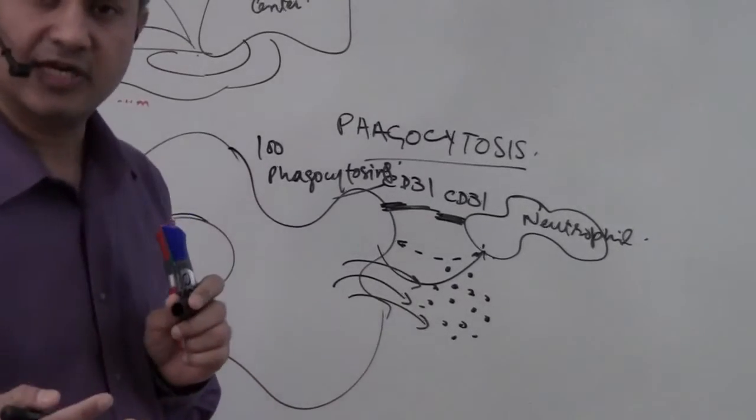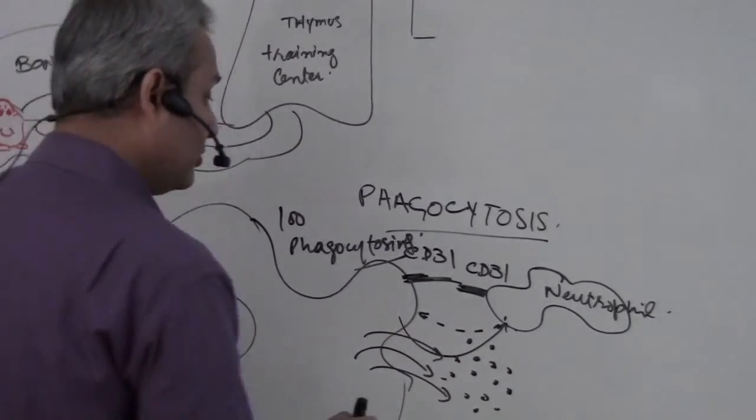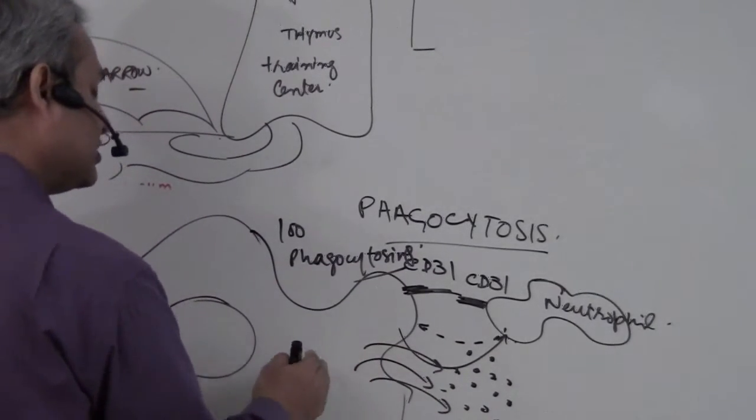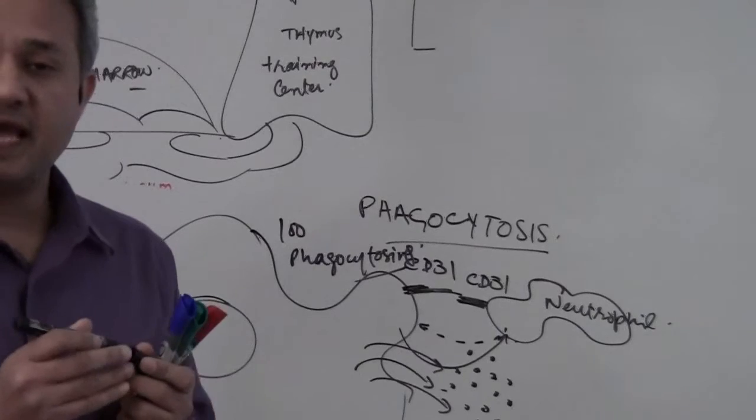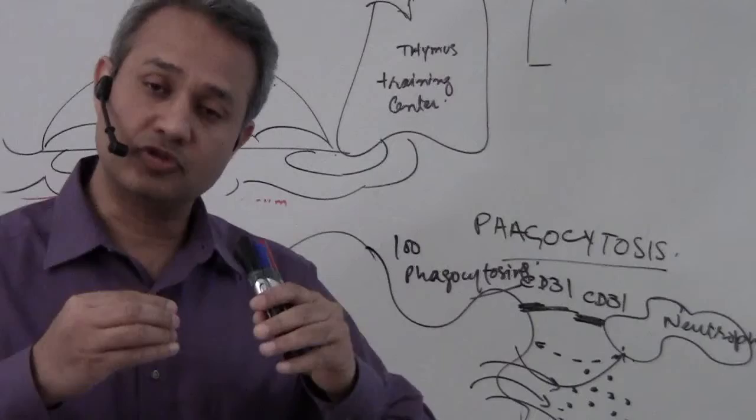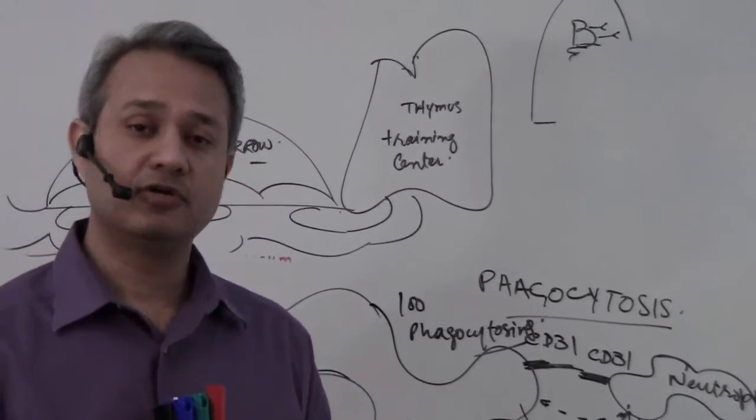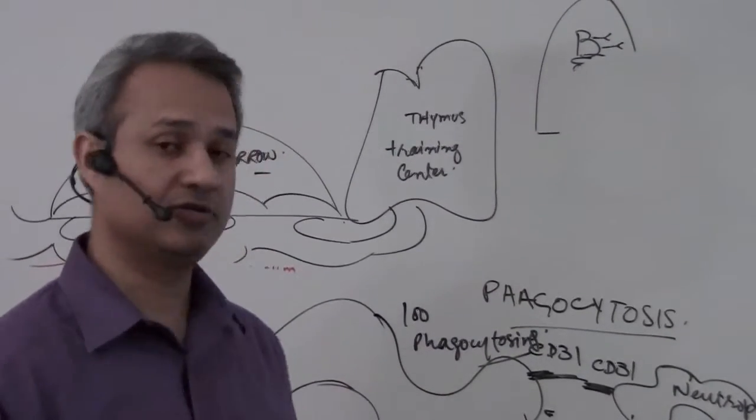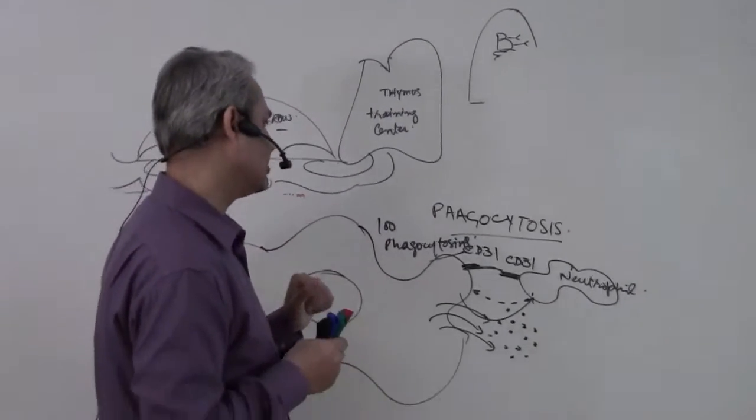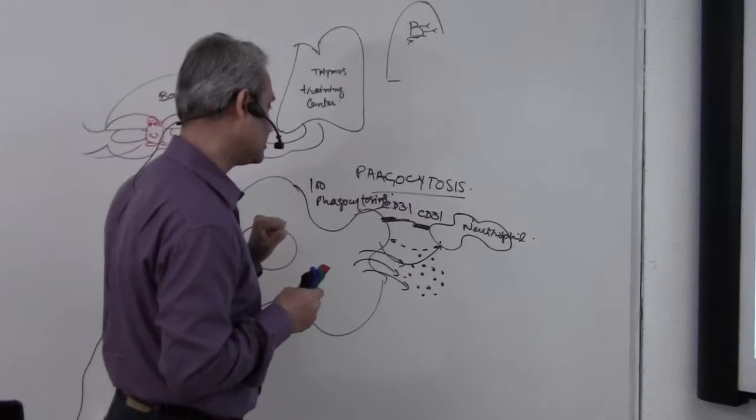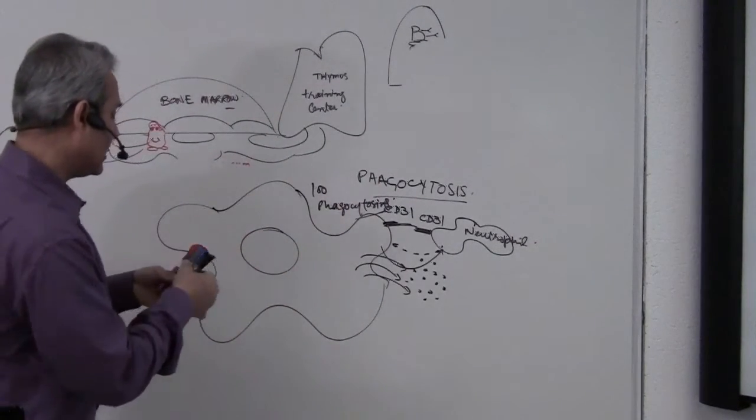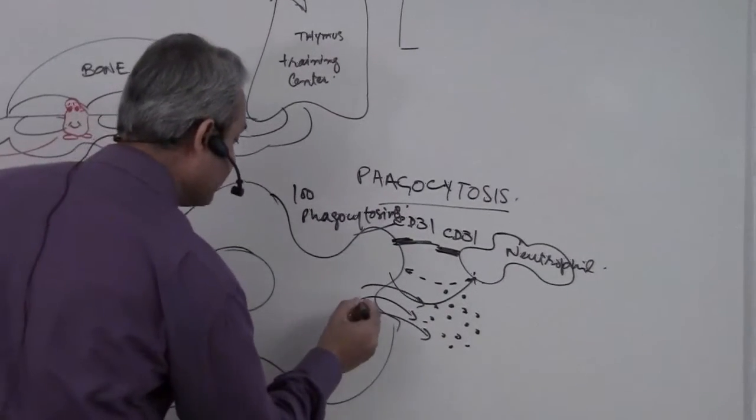These cytokines become chemotactic factors that also damage the macrophage itself. With every phagocytosis, there is some damage to the macrophage, so after up to 100 phagocytosis events, the macrophage will be out of commission and dead.